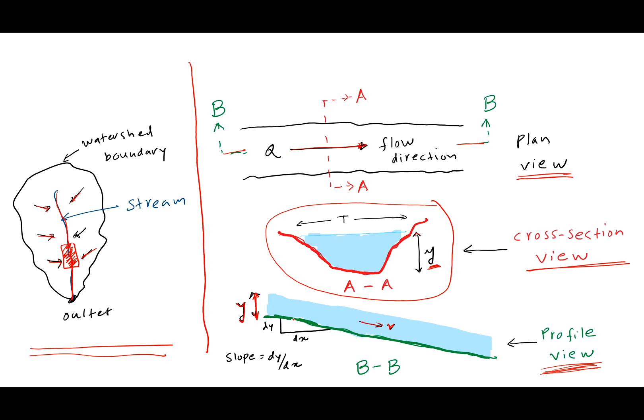Also shown on this slide is the slope. The bed slope is dy/dx — the vertical height divided by the horizontal distance. That is the channel bed slope.